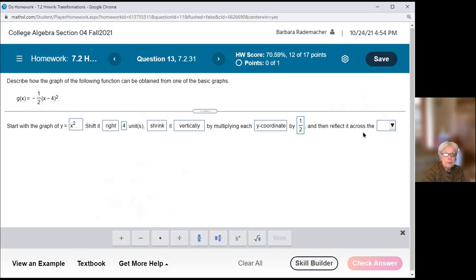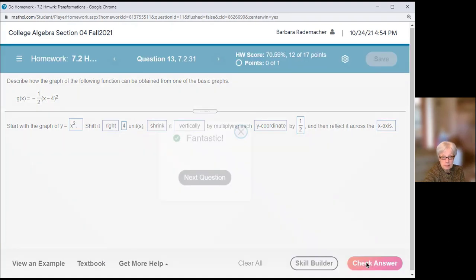And then reflected across the x axis. That negative sign reflects the graph across the x axis. Notice I didn't say negative one half. That's because the negative sign and the one half perform different jobs. Very good.